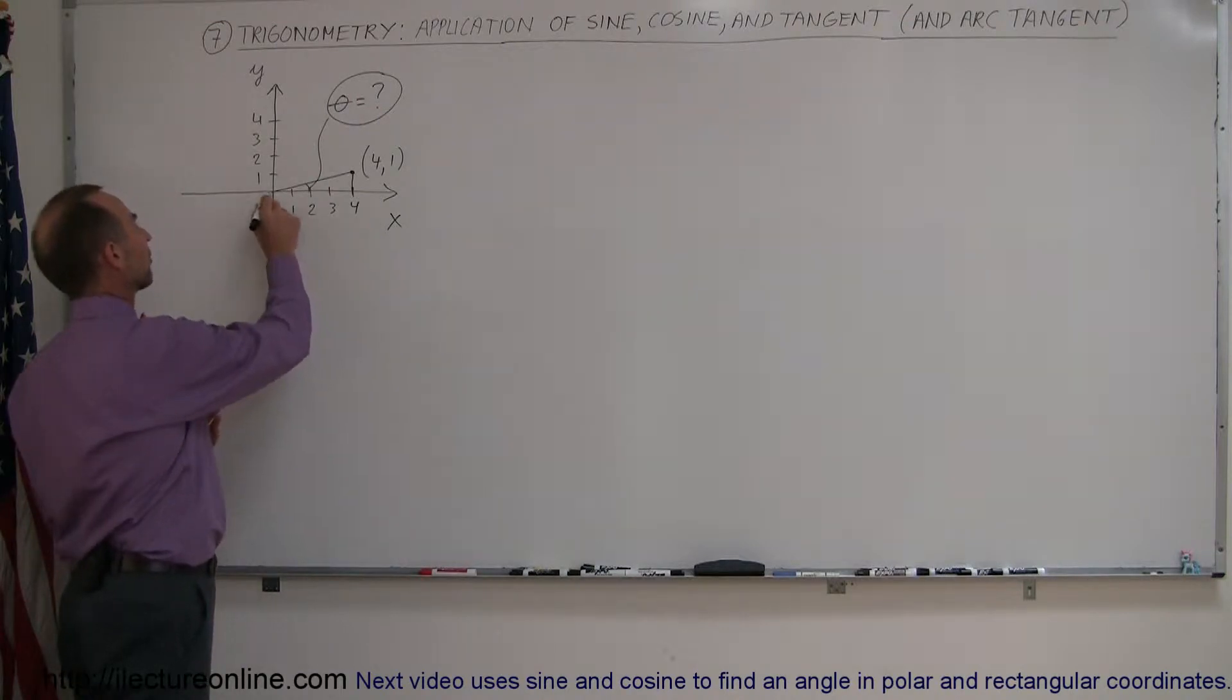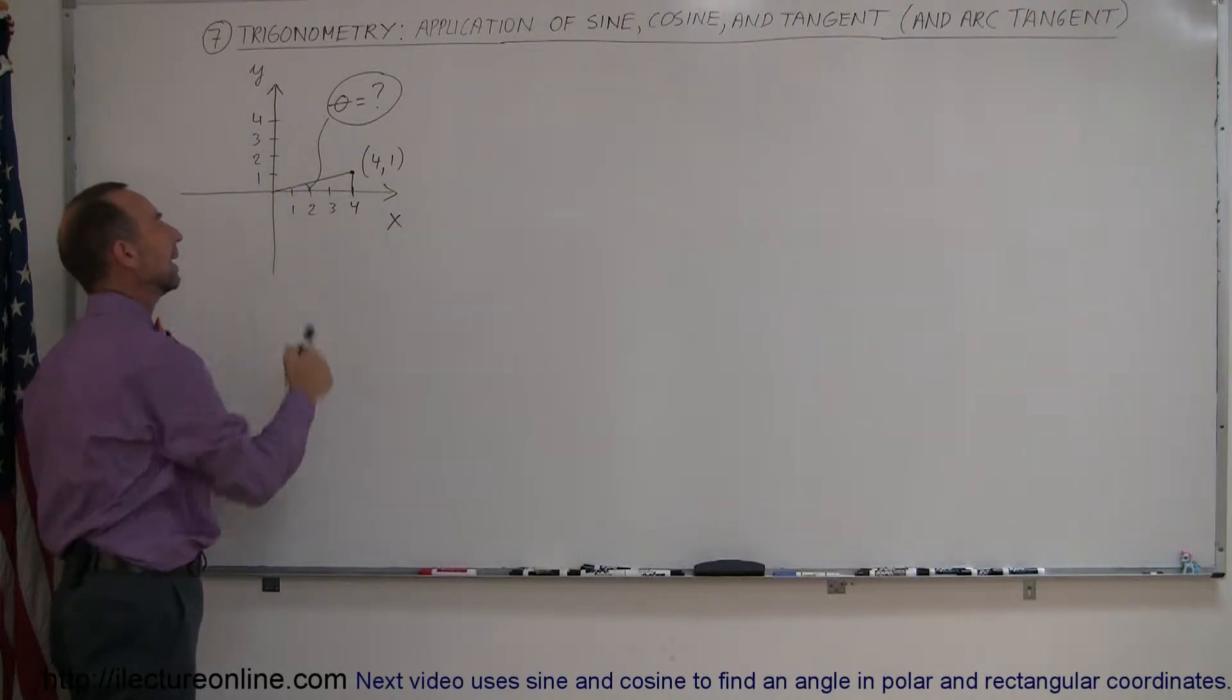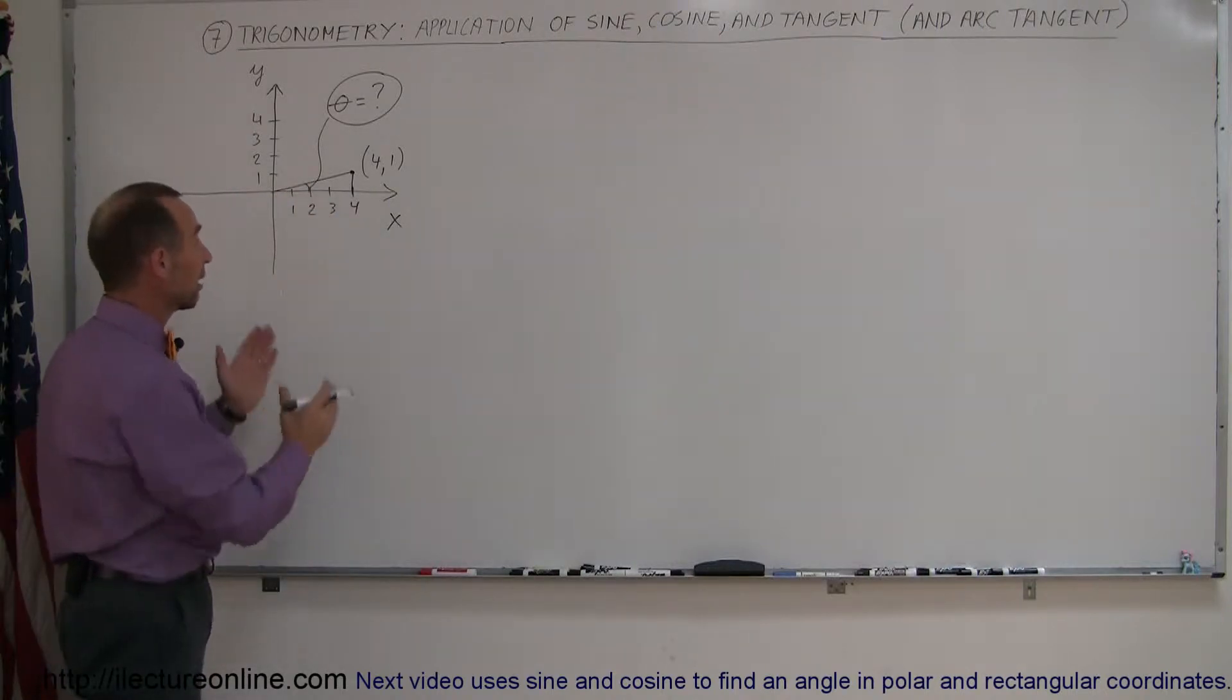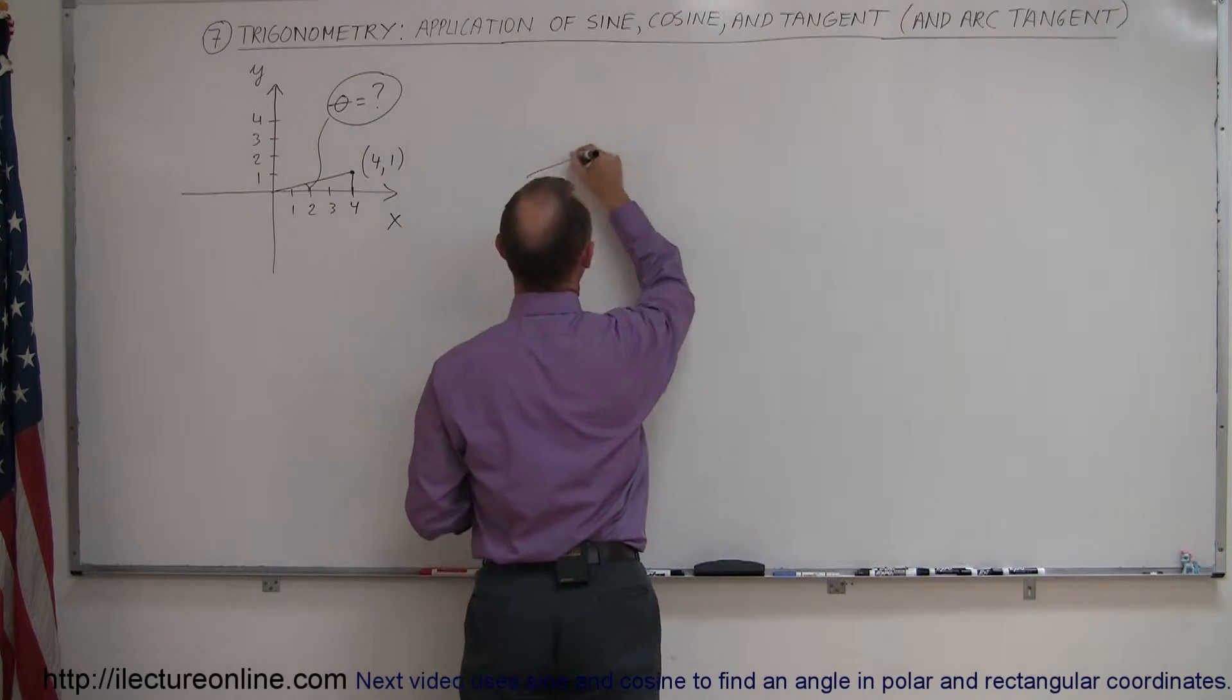And let's say that we draw a line from the origin to that point, and we want to know the angle between that line and the x-axis. So if we take that and we draw a triangle, it would look something like this.